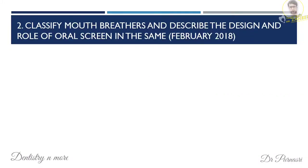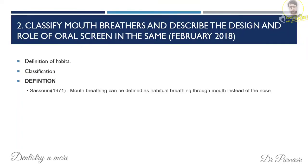The next question: classify mouth breathers and describe the design and role of oral screen. There are three parts: classify mouth breathers, then the design, then the role of oral screen. Mouth breathing is defined as habitual breathing through the mouth instead of the nose — this was given by Sassoni. You can start with the definition of habit, then move to the classification.